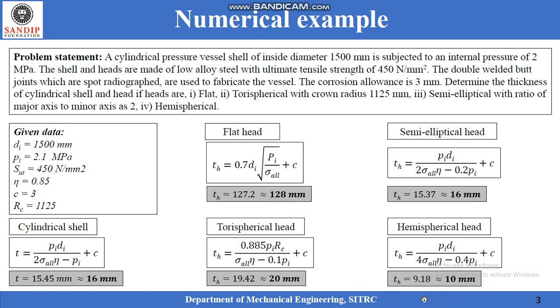Hemispherical head results in the smallest thickness of the head, which indicates that there is a lot of saving of material in case of hemispherical head. As far as material cost is concerned, hemispherical head is the preferred one. However, it can also be argued that as far as manufacturing cost is concerned, flat head is the best option. Among the formed heads, torispherical head is the shallowest head whereas hemispherical head is the deepest head. Therefore, the manufacturing cost of torispherical head will be lesser as compared to the hemispherical head.